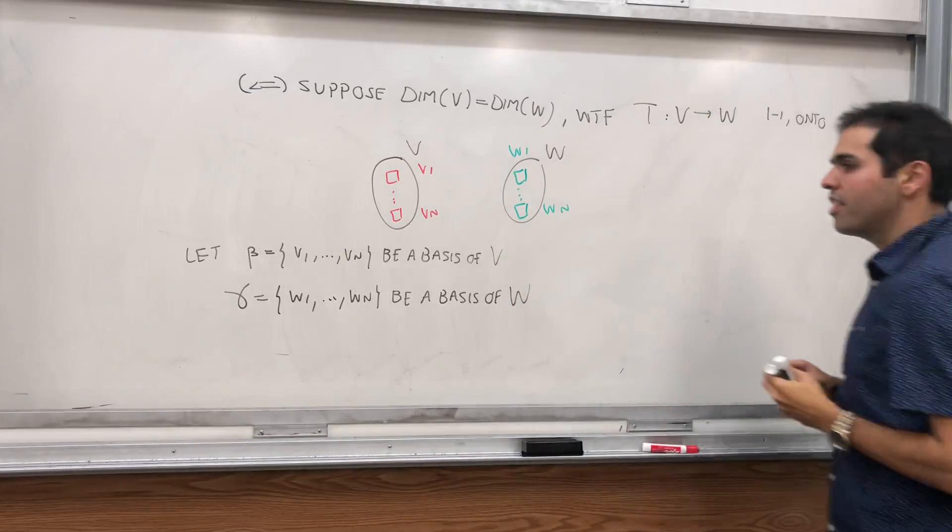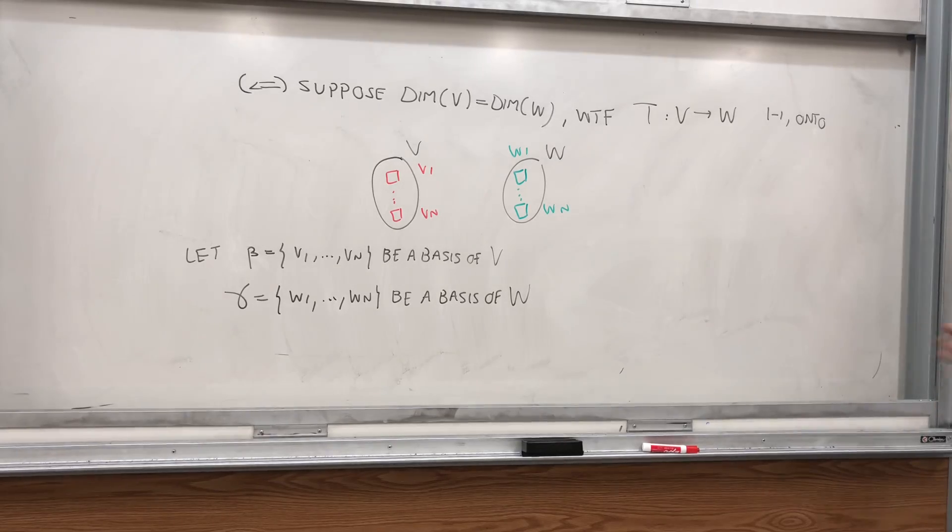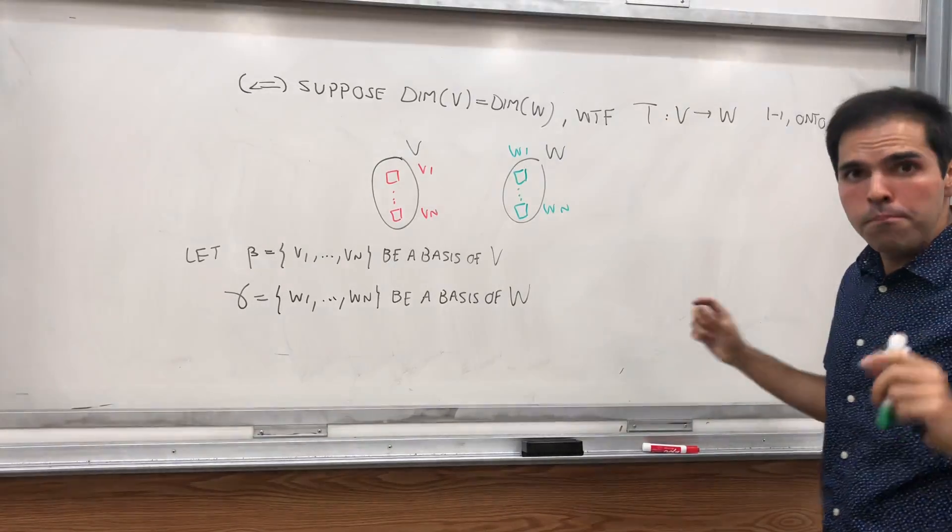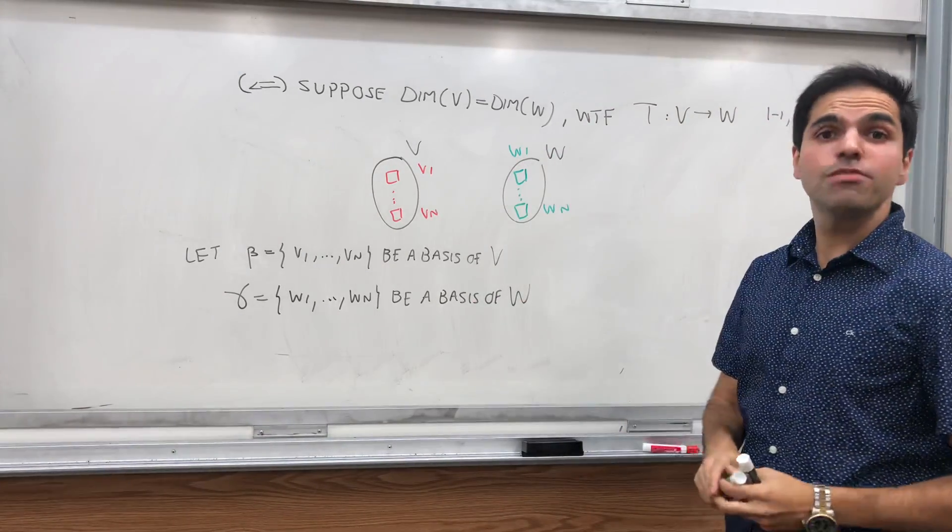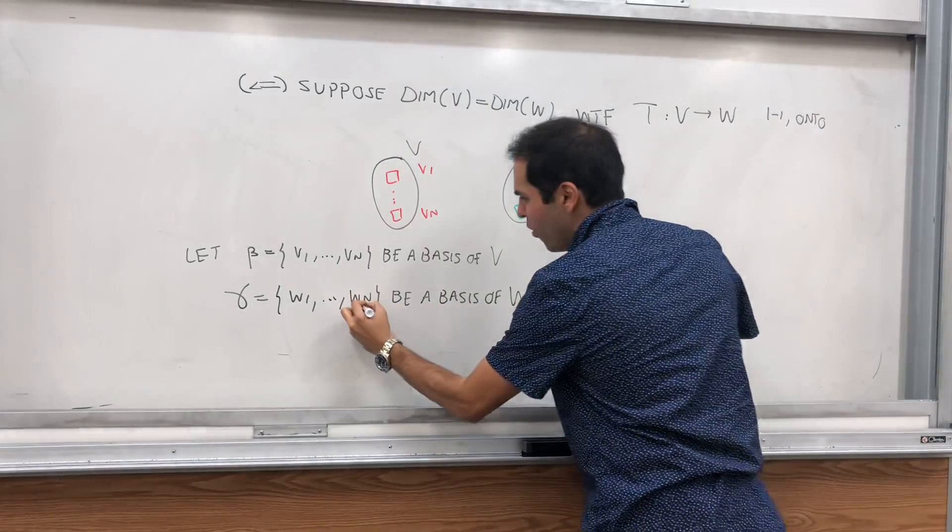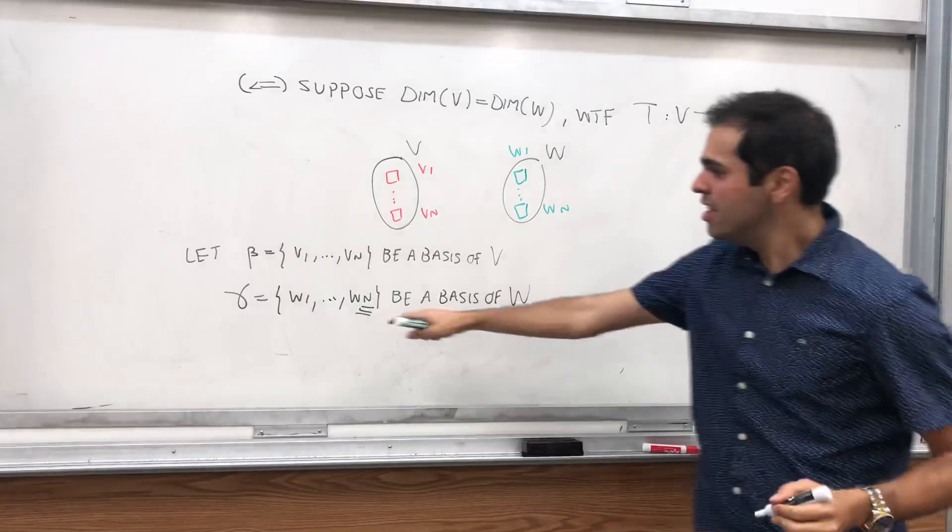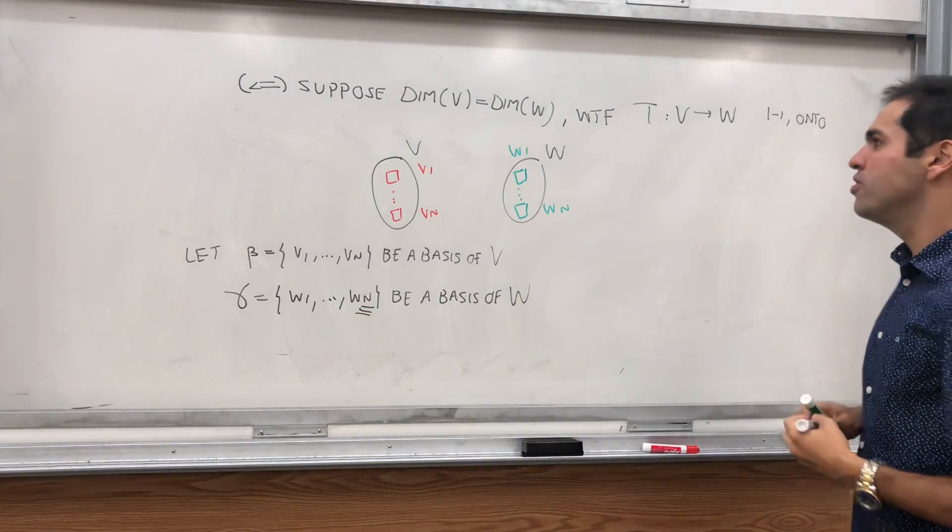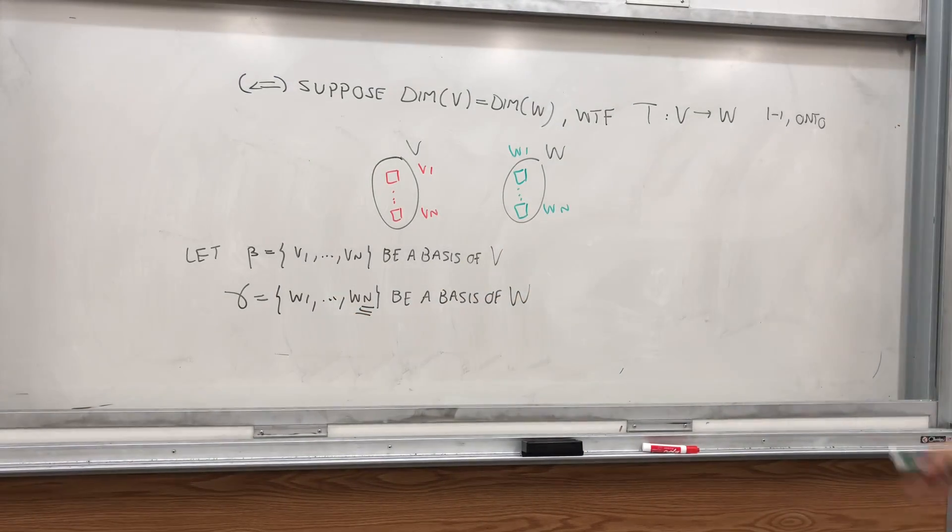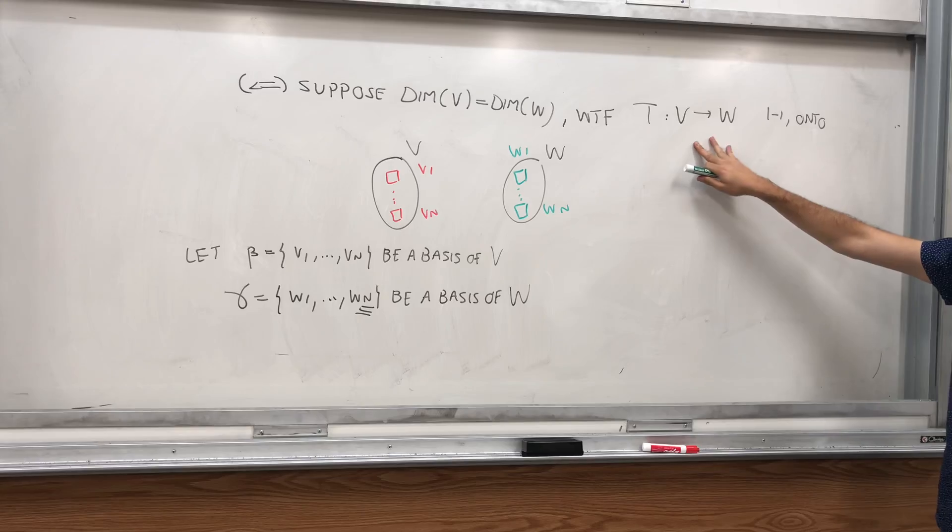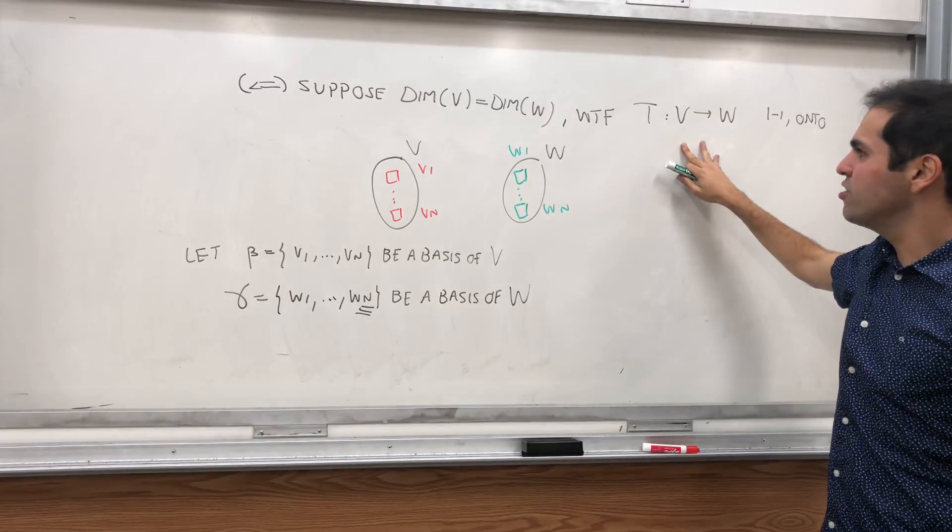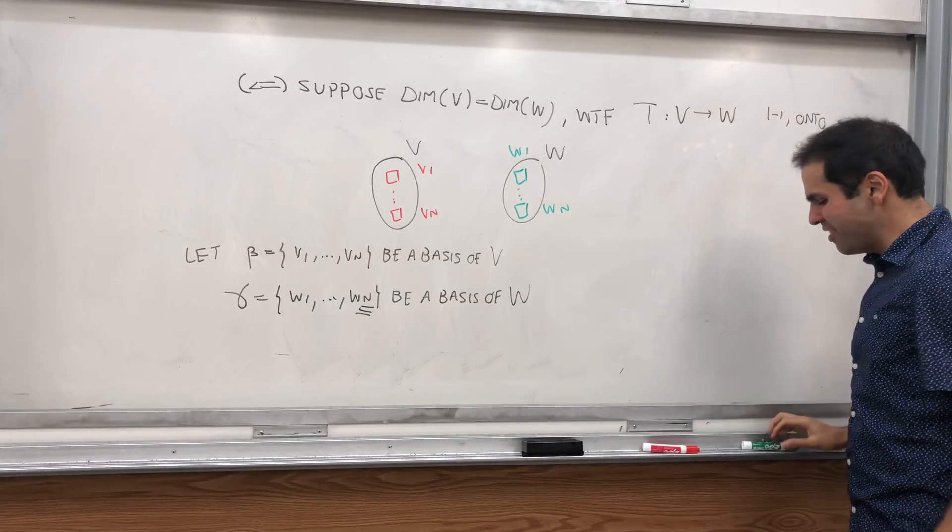And here's an important thing. Usually, we say W1 up to Wm because the dimensions may not be the same. But the whole point is, since dimension of V equals dimension of W, we'll just do W1 up to Wn. And remember, the whole goal of this is to find a linear transformation between those two things.